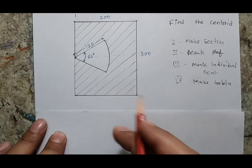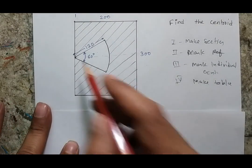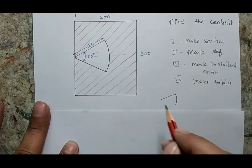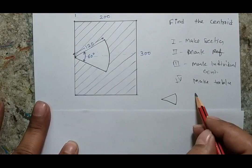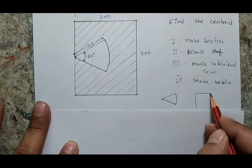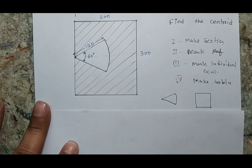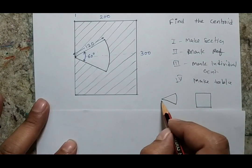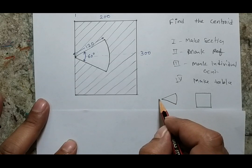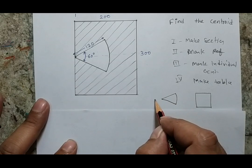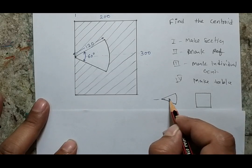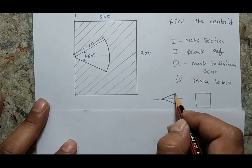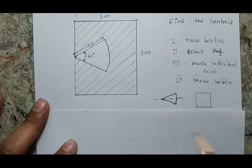If I will identify, I can see that one section would be the arc section. The second one would be the rectangular body. Before I go further, I would like to tell you how we can identify or calculate the centroid of an arc body.